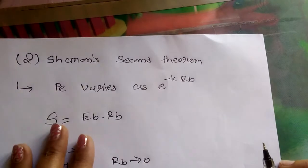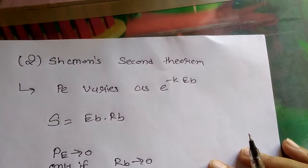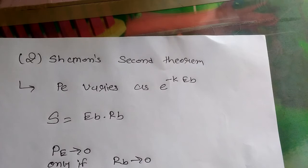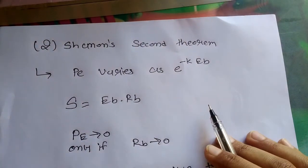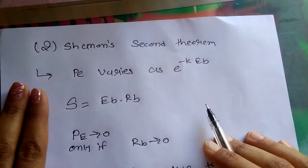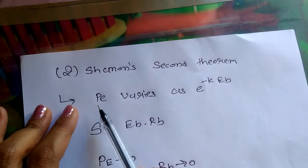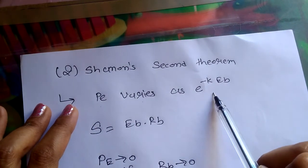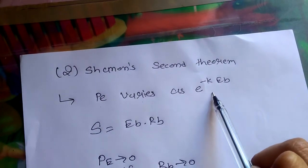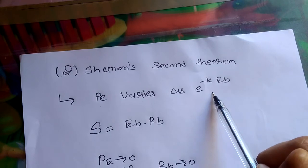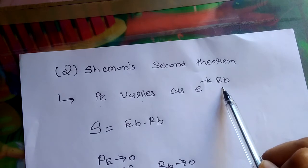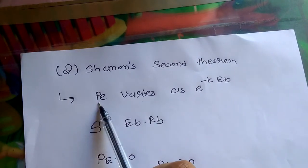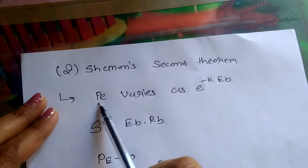Now we are talking about the second portion of this theory: Shannon's theorem. This theorem is basically the framework of the binary symmetric channel. The error probability Pe varies as exponential of negative constant k times Eb, where Eb means energy per bit and Pe means error probability.